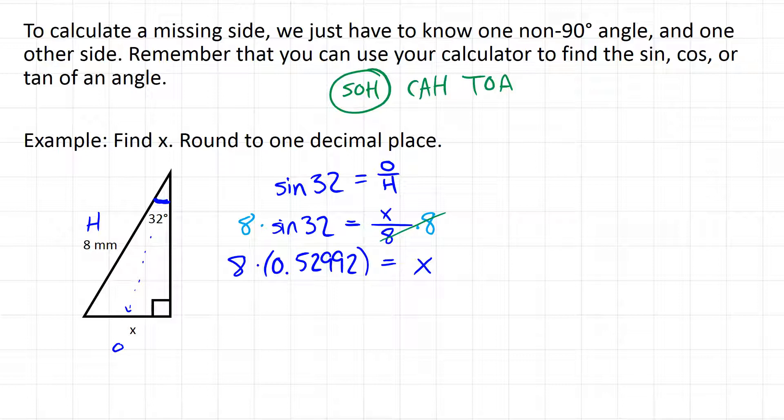And that's going to be equal to x. You could, if you're comfortable with your calculator, you could just type in 8 times sine 32 and do it all in one step. Or you could find that decimal for sine 32 first and then multiply it by 8. Whichever way you do it, you're going to be left with x. And we get that rounding to one decimal place, it's 4.2. And the units are millimeters, because the units of the other side that we were using were in millimeters. So there we go. We found an unknown side x.